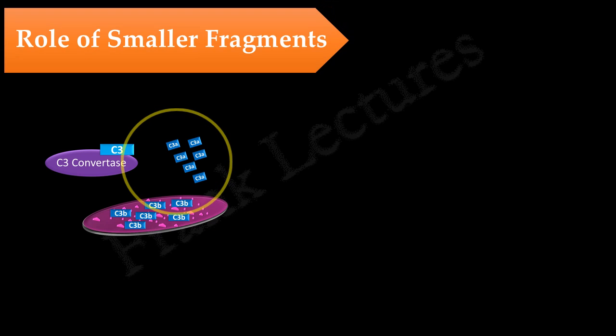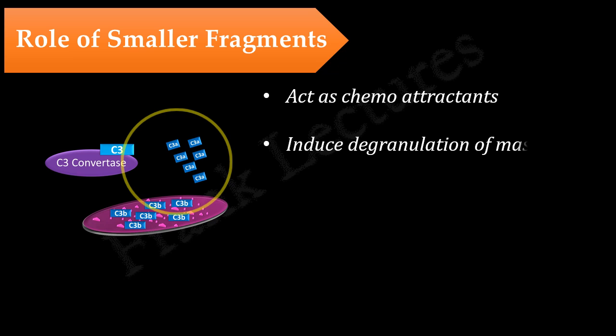In all three pathways of complement activation, smaller fragments are released — for example, C3a and C5a. These smaller fragments act as chemoattractants; they activate and recruit phagocytes. Besides this, they also induce degranulation of mast cells and basophils. The granules of mast cells and basophils contain vasoactive mediators, so these smaller fragments affect dilation of blood vessels and vascular permeability, thereby promoting inflammation.